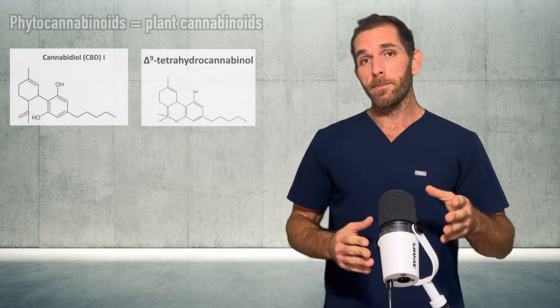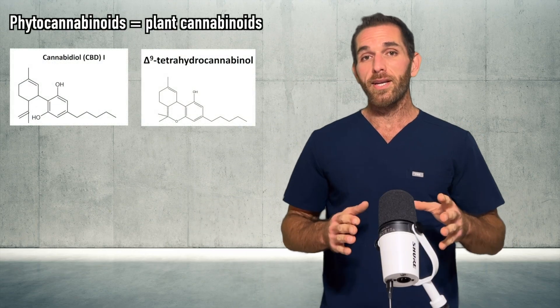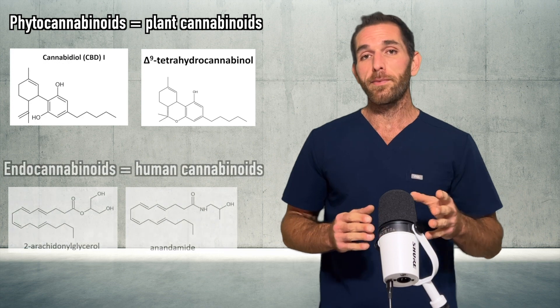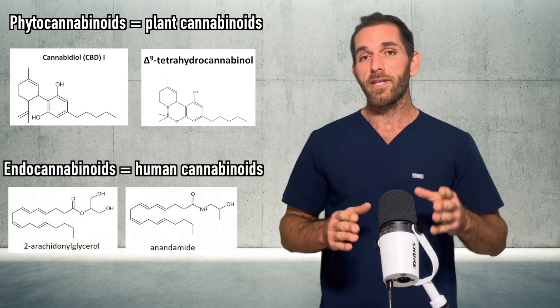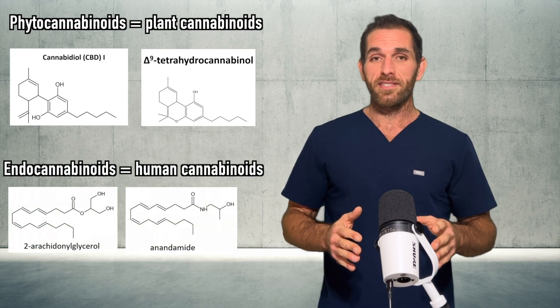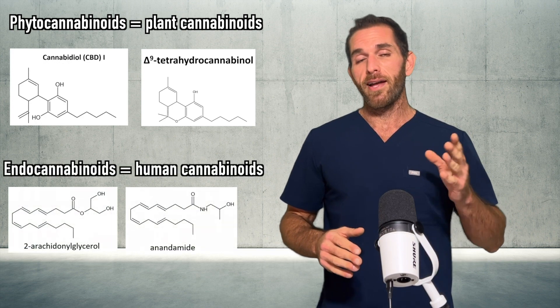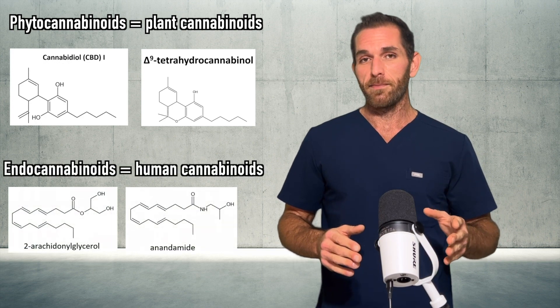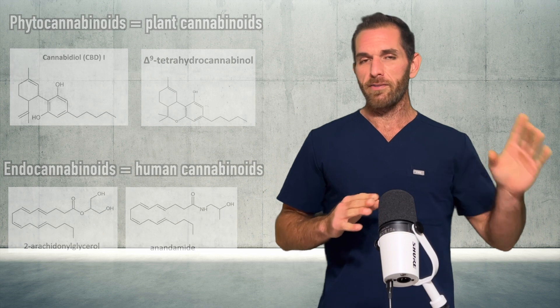Because they come from the plant, they're termed phytocannabinoids, whereas endocannabinoids are the cannabinoid-like molecules we produce endogenously to interact with our endocannabinoid system — which is a topic for another video.